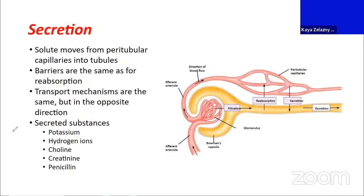The barriers for secretion are the same as for reabsorption. We have to cross the endothelial layer of the capillary, a basement membrane, a bit of peritubular fluid, and then the epithelial lining of the nephron itself. We say endothelial about capillaries because that's the inside of your body. The nephron we think of as almost being open to the outside world—it connects to the major and minor calyces, the renal pelvis, ureter, bladder, and urethra—which is why we use the word epithelial for the cells lining the nephron.